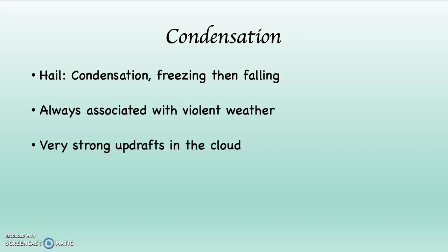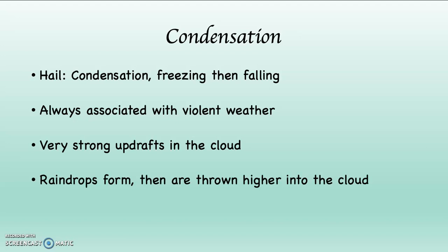Hail is caused by very strong updrafts of air within the cloud. Instead of the wind blowing horizontally across the surface, the wind blows vertically upwards away from the surface, higher up into the atmosphere. If a little raindrop is forming in the bottom of the cloud and it gets hit by one of these strong updrafts, the raindrops are thrown higher up into the cloud. In the troposphere, the higher up you go, temperature goes down, so when they reach that higher altitude it's colder and they freeze. That's how you make hail.